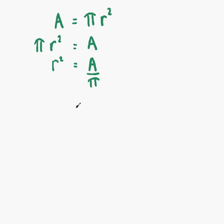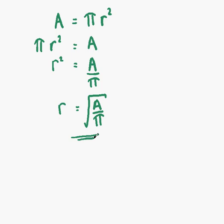We want r at the left-hand side. What we're doing is unsquaring the r, and the maths word for unsquaring is taking the square root. We take the square root on the left-hand side to leave us with r, which means we must take the square root on the right-hand side also. So r equals the square root of A over pi. And that's our answer — we have now changed the subject of our formula to r.